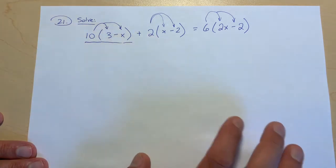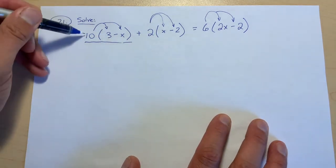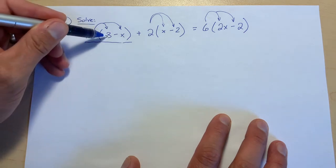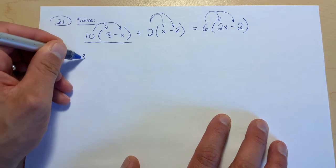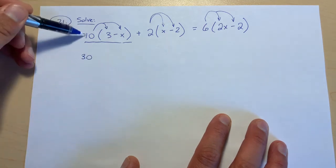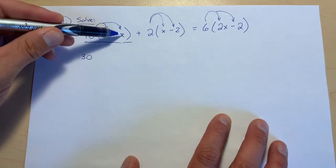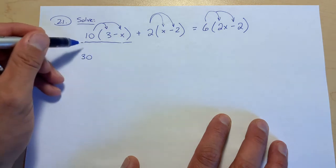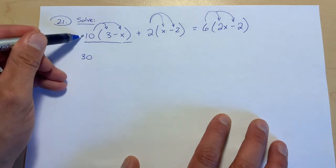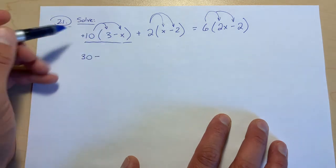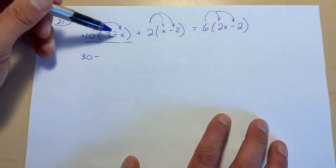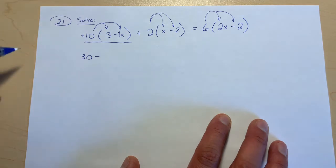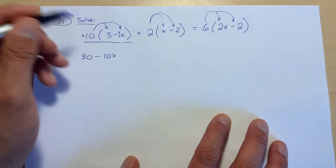So we're going to multiply this 10 times the first thing in the bracket which is the 3. So 10 times 3 is 30. 10 times negative x, so do the sign first. A positive times a negative gives us a negative. 10 times what we assume is 1, 10 times 1 gives us 10, and then we add on the letter.